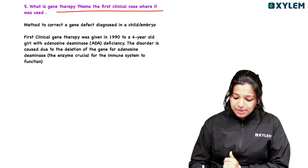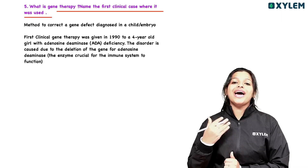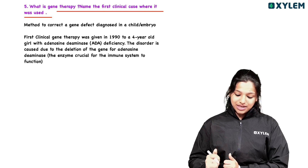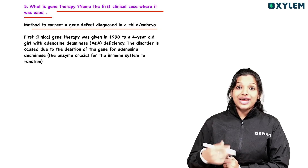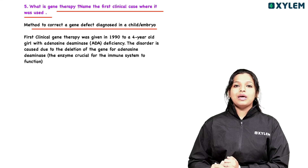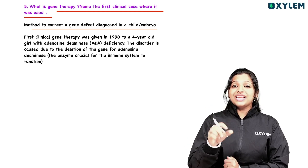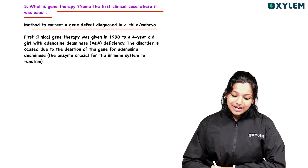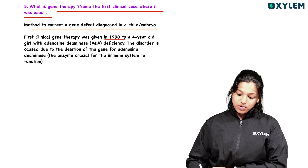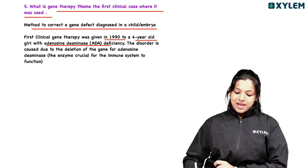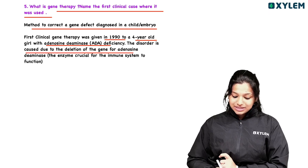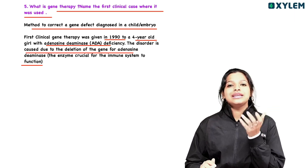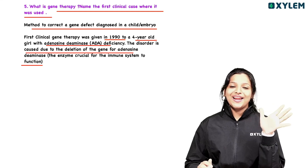Question five: What is gene therapy, and name the first clinical case where it was used? Gene therapy is the method to correct a gene defect diagnosed in a child or embryo. The first clinical gene therapy was given in 1990 to a 4-year-old girl with adenosine deaminase (ADA) deficiency. This disorder is caused due to deletion of the gene for adenosine deaminase, affecting immune system function.